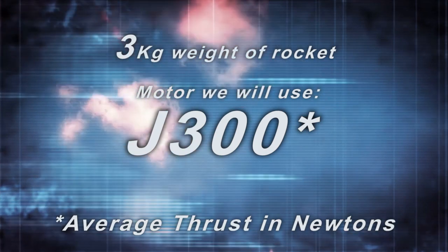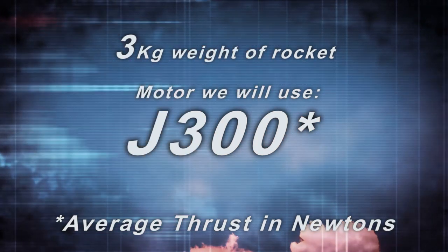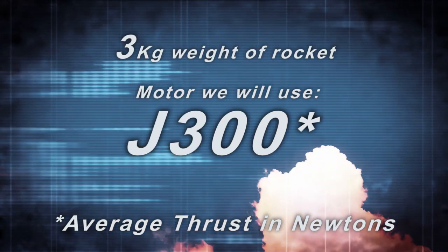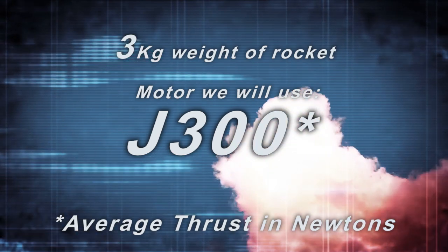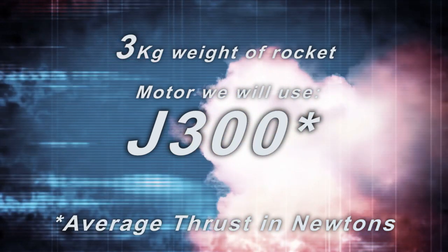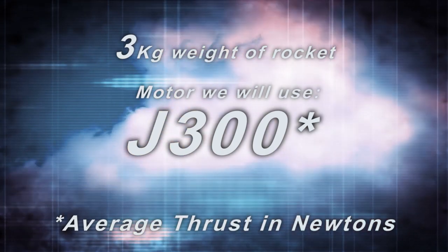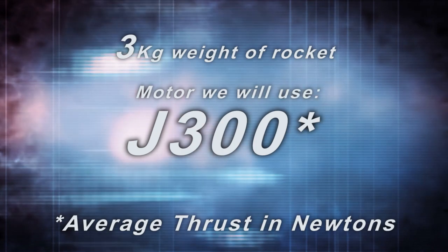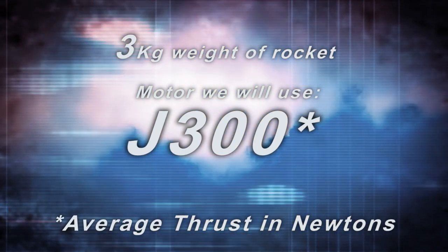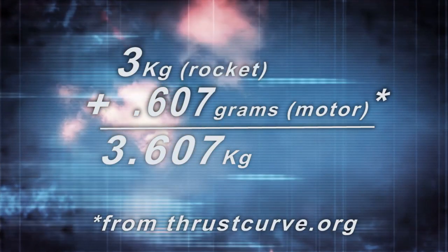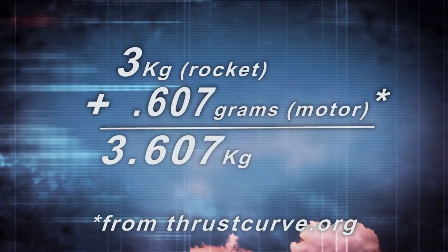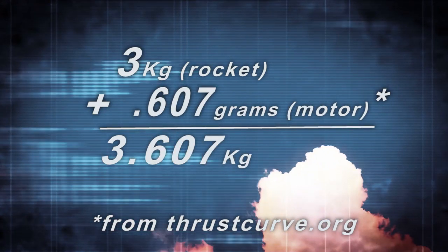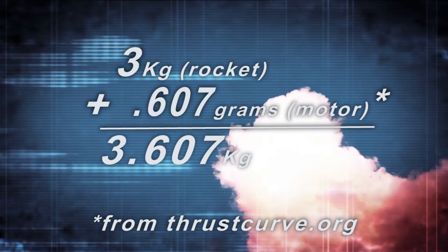We will use a J300 as our potential motor. The 300 following the J in the motor designation is the motor's average thrust measured in Newtons. We will use this value, labeled as force, for our calculations. The mass of our motor is 607 grams, taken from thrustcurve.org, making our total weight 3.607 kilograms.